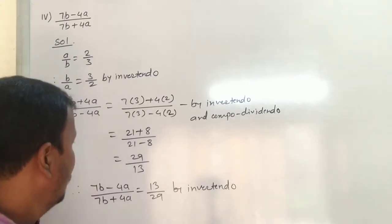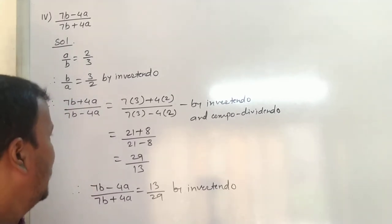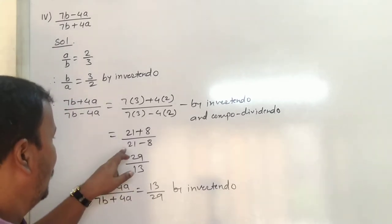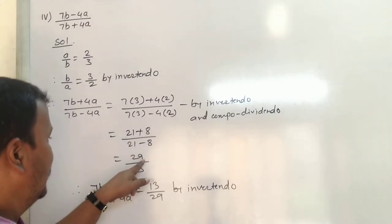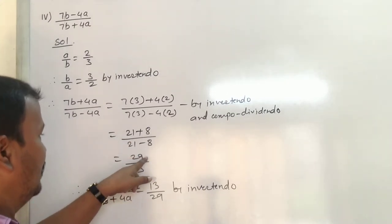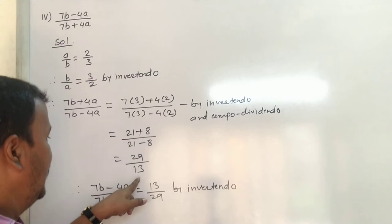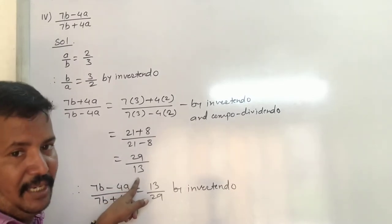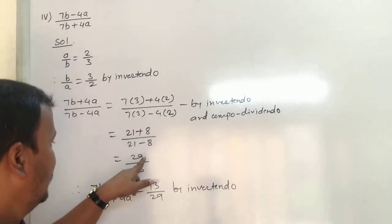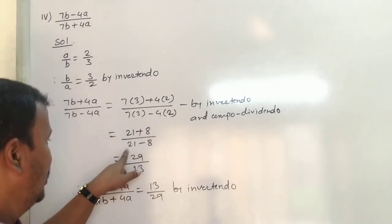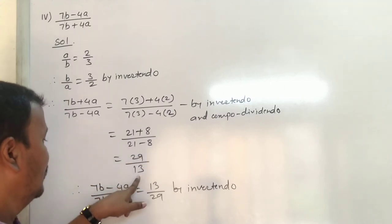7 into 3 is 21, 4 into 2 is 8. So the numerator is 21 minus 8 and the denominator is 21 plus 8. 21 plus 8 is 29, and 21 minus 8 is 13.